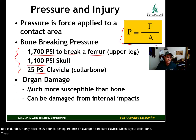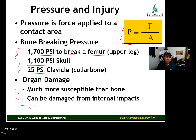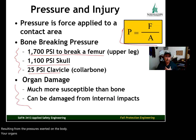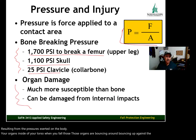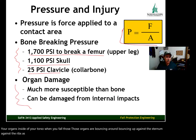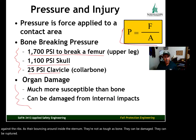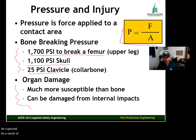There's also the potential for organ damage resulting from the pressures exerted on the body. Your organs inside your torso, when you fall, those organs are bouncing around, bouncing up against the sternum, against the ribs. As they're bouncing around inside the sternum, they're not as tough as bone. They can be damaged, they can be ruptured as a result of the fall incident.